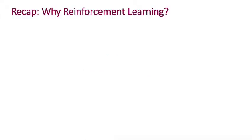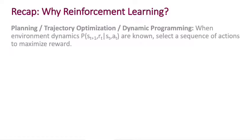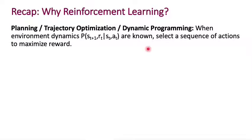To motivate model-based reinforcement learning, let's go back to why we want to do reinforcement learning. Because remember, we have classes of approaches based on dynamic programming, like value iteration and policy iteration, and from other branches of study like planning and trajectory optimization, we know what to do when the environment dynamics are known. When P of s_{t+1}, r_t given s_t, a_t are known, then you know exactly what to do to maximize your reward.